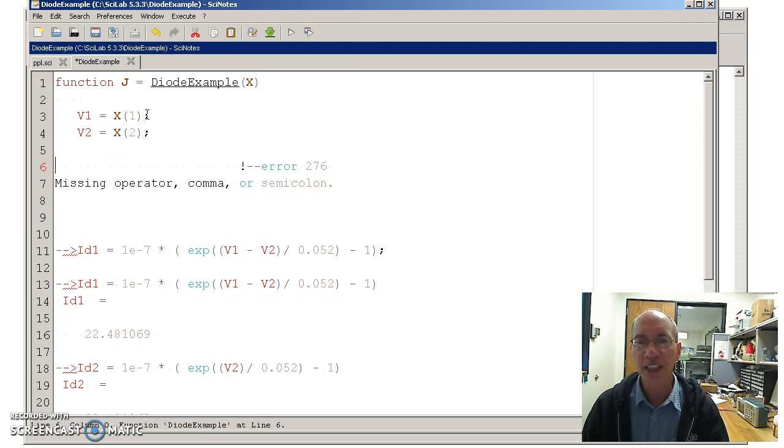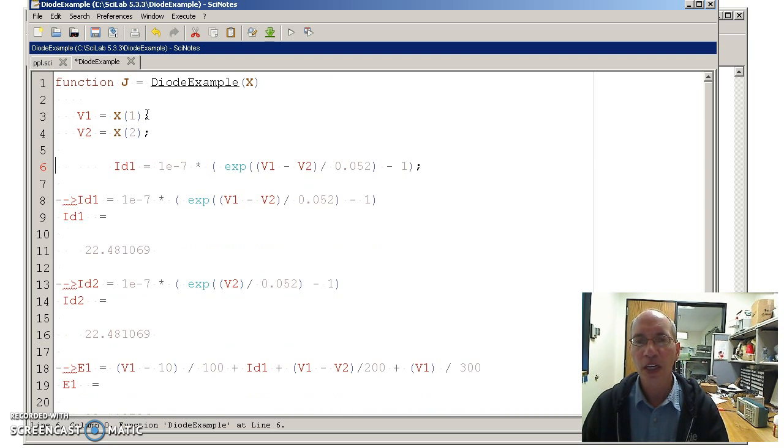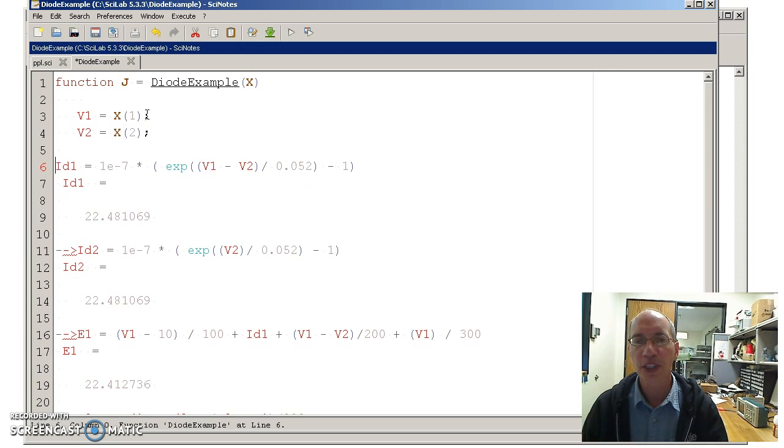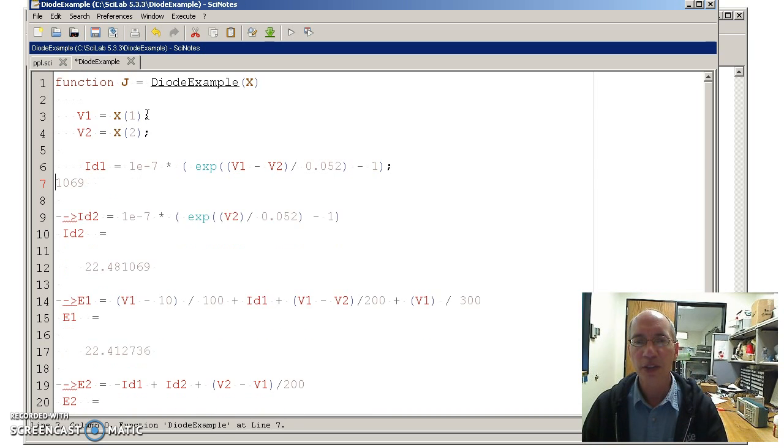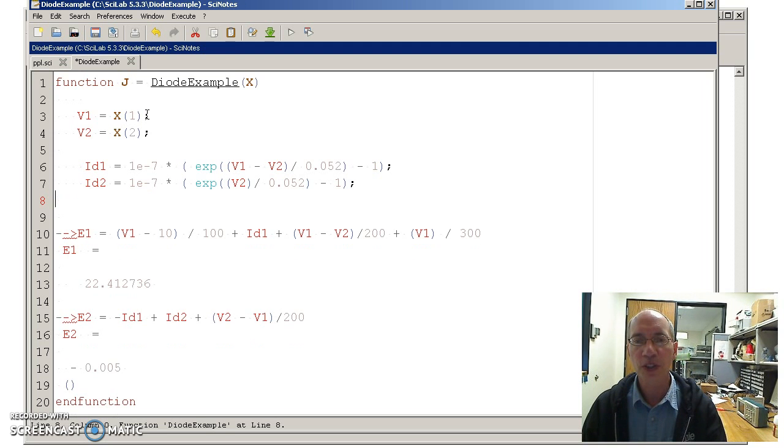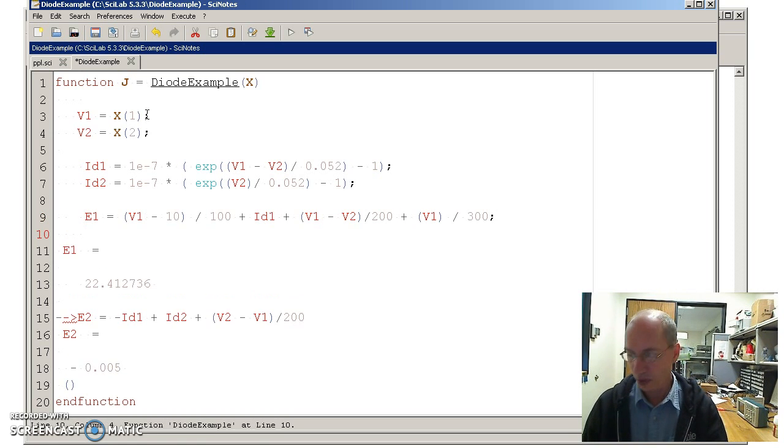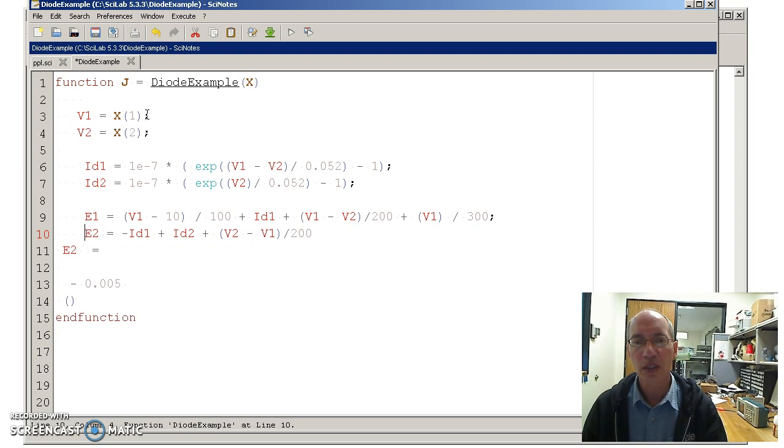Then the equations I had, erasing the mistakes I made. I now know the current through the first diode. Throwing in a semicolon, so I don't want to print out the results. I know the current through the second diode. Once I enter those currents, I can calculate the two errors.